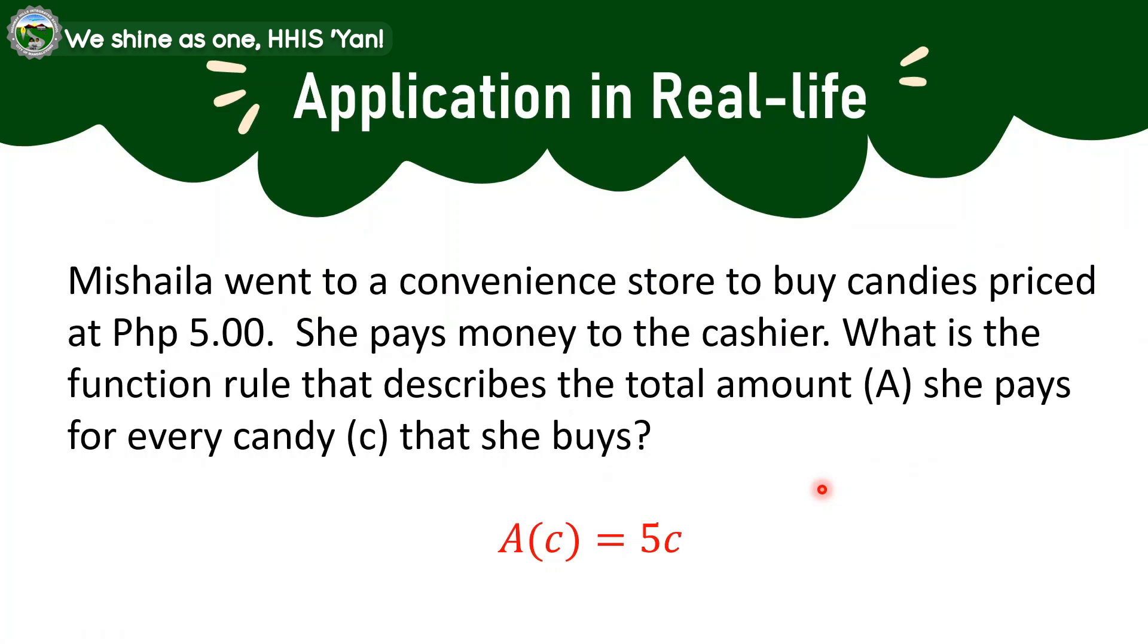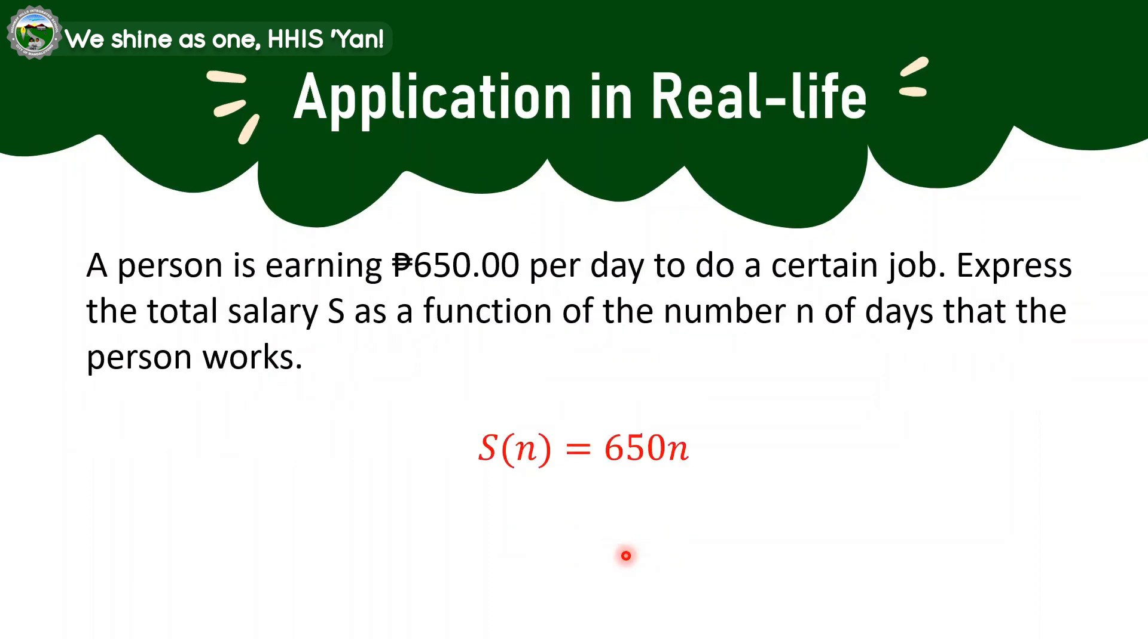Application in real life. Michelle went to a convenience store to buy candies priced at 5 pesos. She pays money to the cashier. What is the function rule that describes the total amount A she pays for every candy C that she buys? So the equation depicted in here is A(C) equals 5C. A person is earning 650 pesos per day to do a certain job. Express the total salary S as a function of the number N of days that the person works. So that is S(N) is equal to 650N.